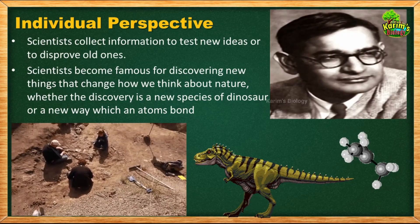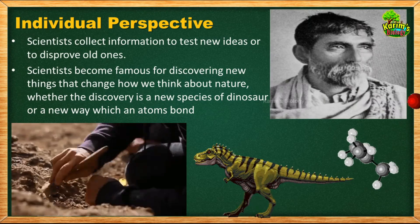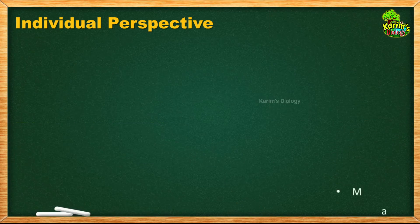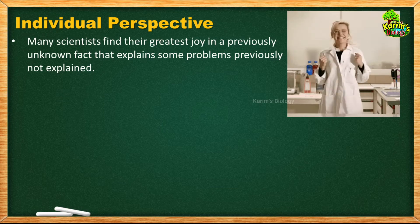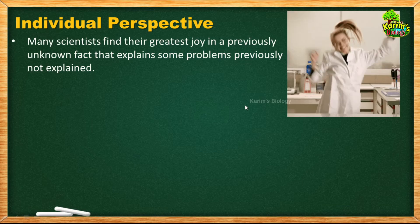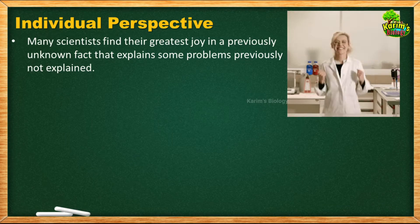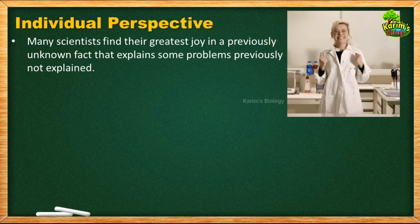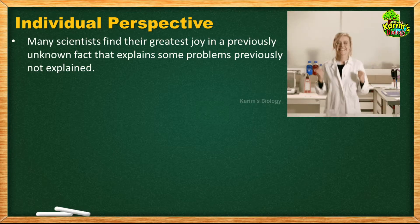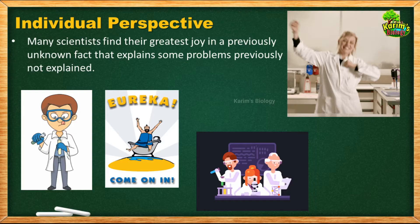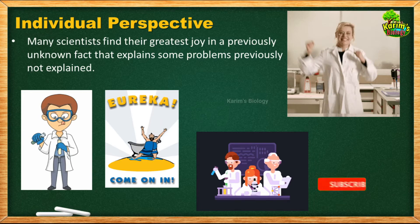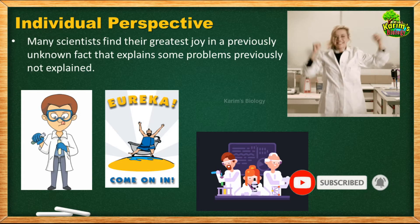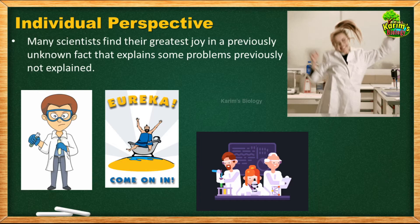All these discoveries and inventions fascinated people, and as a result, scientists became famous. Some scientists discover new things and become famous individually. Not only that — many scientists find their greatest joy in previously unknown facts that explain problems not previously explained. When they discover something completely new to mankind, they become very happy, and their heart fills with joy because they have given something new to the world. Scientists find joy in making these new discoveries and inventions. That is about the individual perspective.